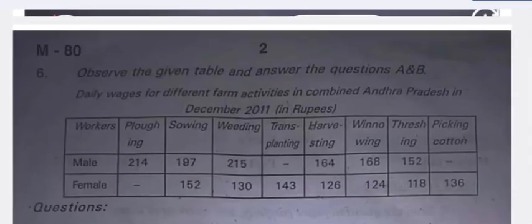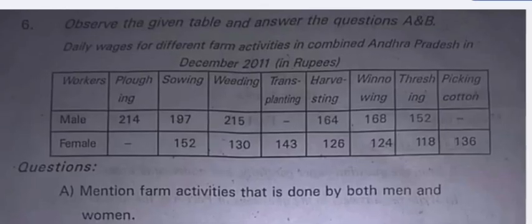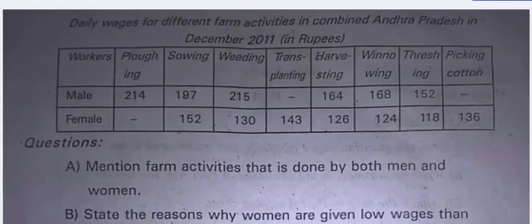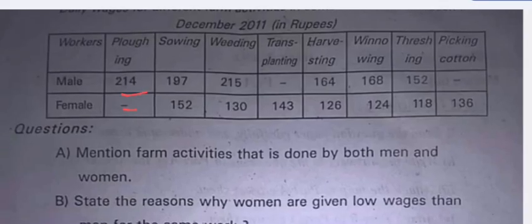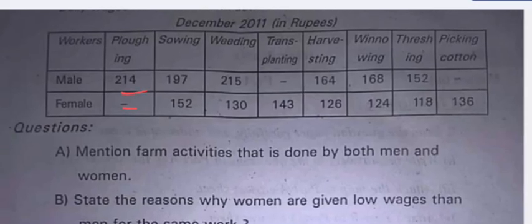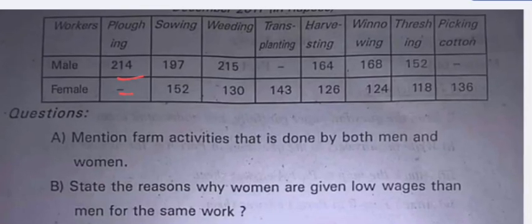Observe the given table and answer questions A and B. The table shows daily wages for different farm activities in the combined Andhra Pradesh position in December 2011 in rupees. Male wages for bluffing are 214 rupees; females are not doing that work. Wherever there is a blank, that kind of work is not done by that particular gender.